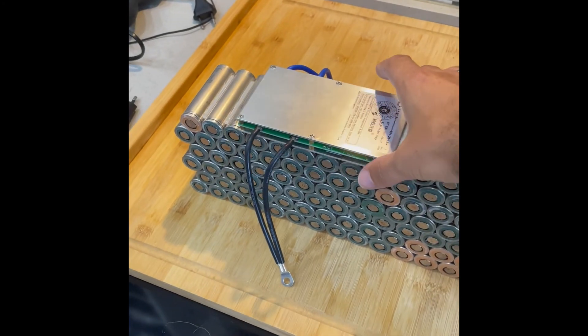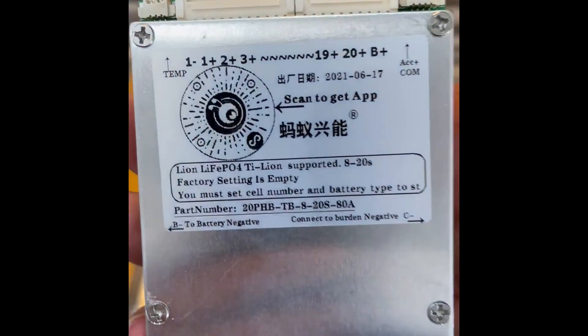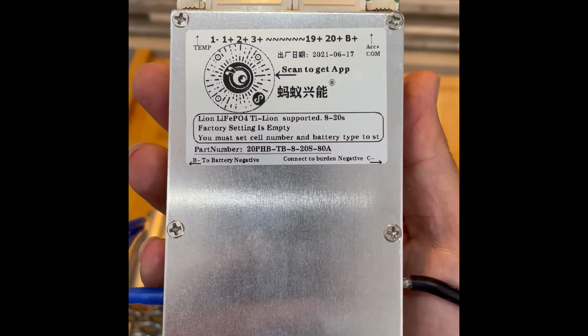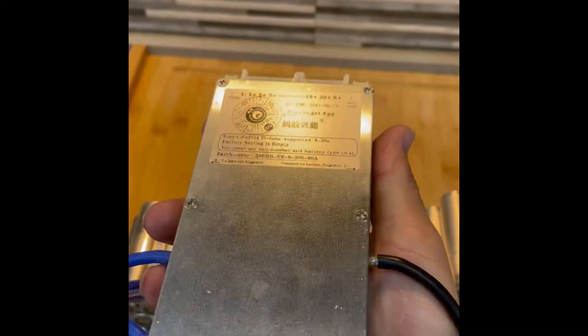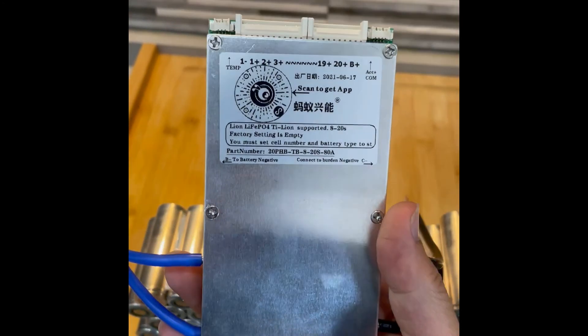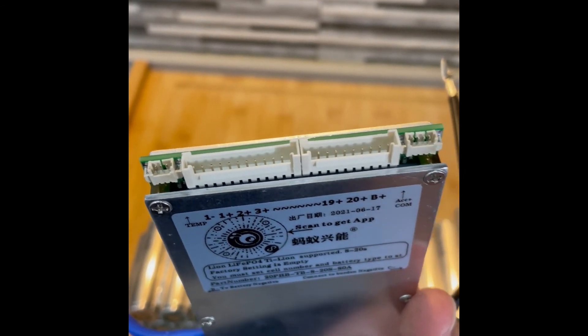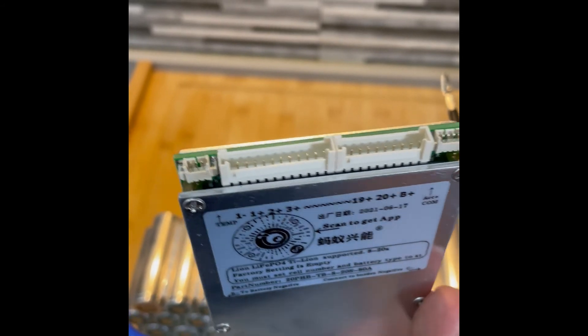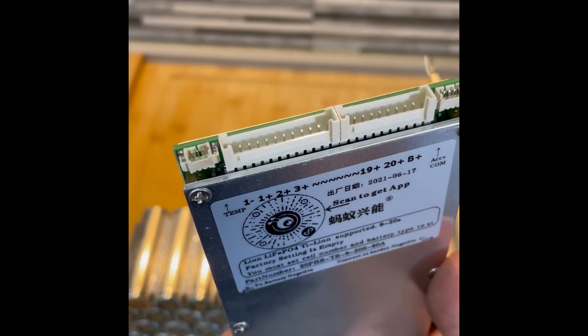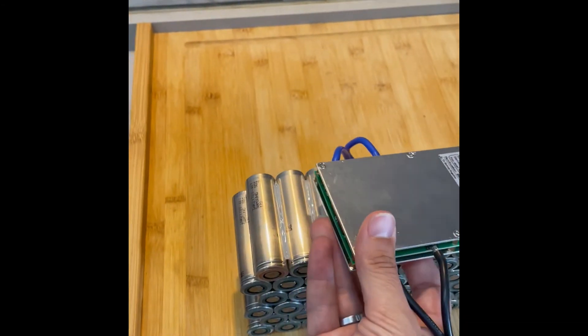And with the BMS right here. Talking about BMS, it is an ANT BMS 20S 80 amps. They work really nice. They have Bluetooth, so I can program it with my iPhone. They have the temperature sensors and the leads for the balancing, and this is the button to connect or to put on and off the battery and the BMS.